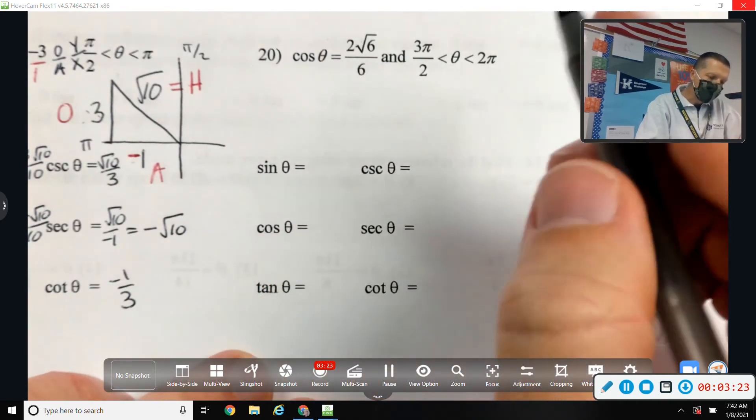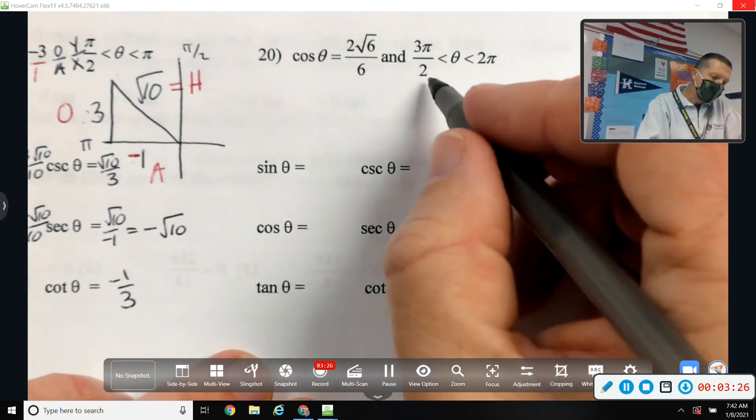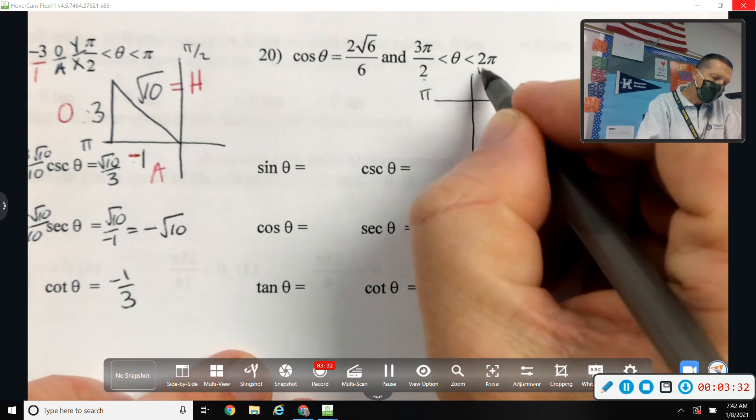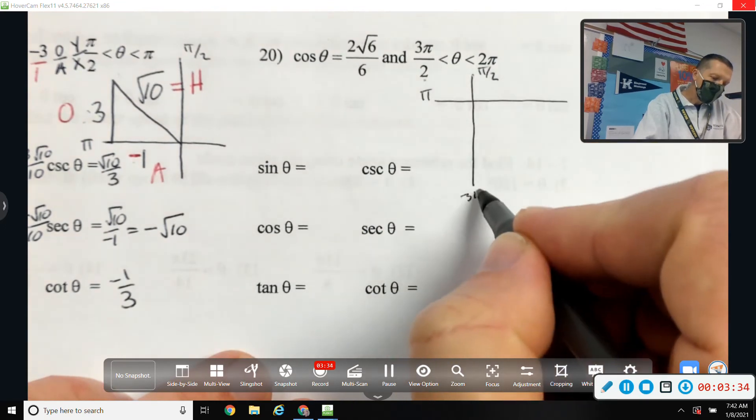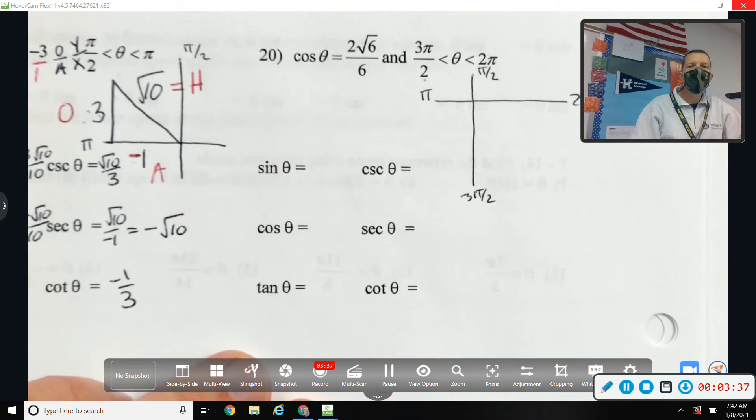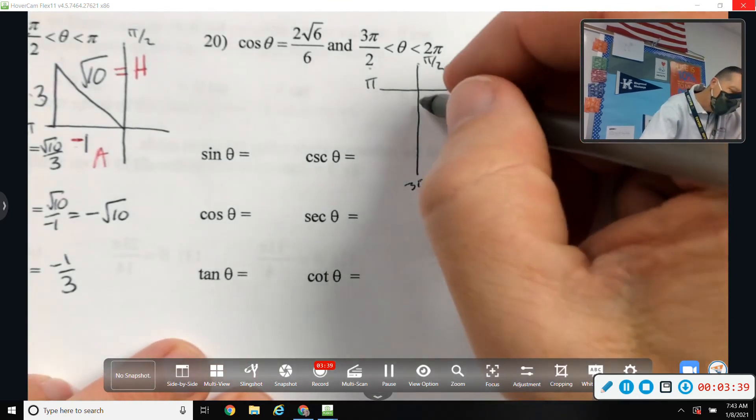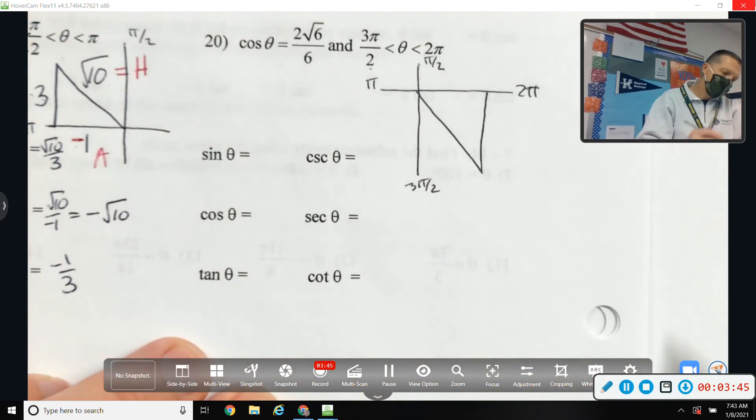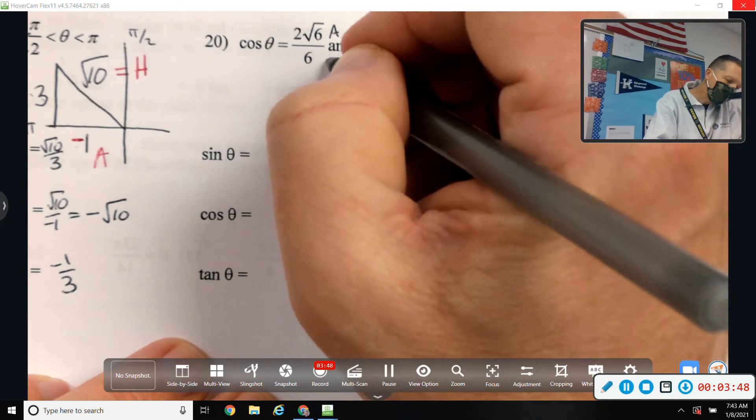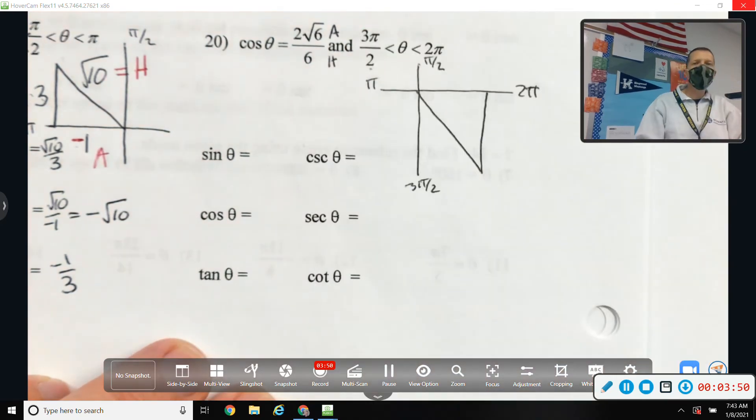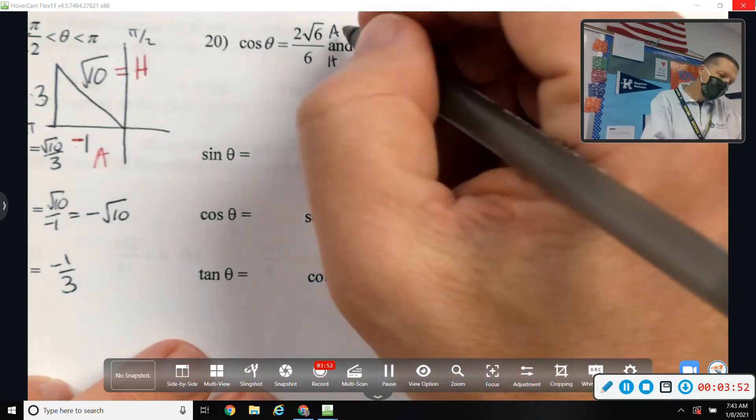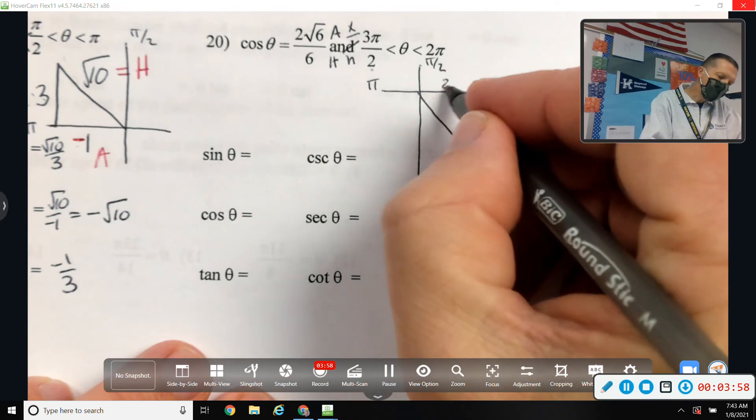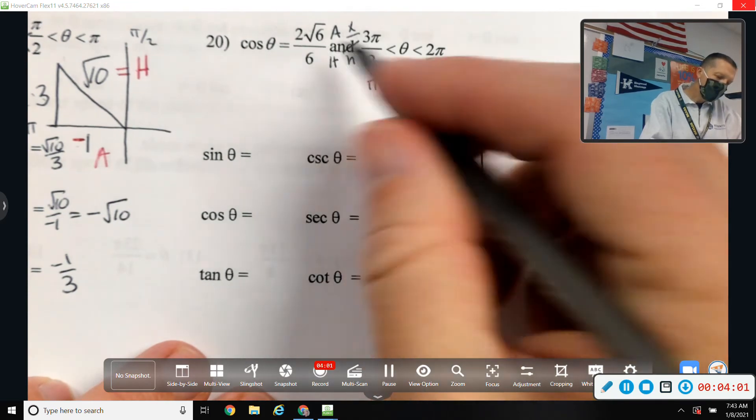Cosine is something ugly. And our angle is between 3 pi over 2 and 2 pi. Let's see, pi, pi over 2, 3 pi over 2, 2 pi. So I know I'm in the fourth quadrant. Cosine is adjacent over hypotenuse, which is x over hypotenuse. So my x value is 2 square root of 6 and my hypotenuse is 6.